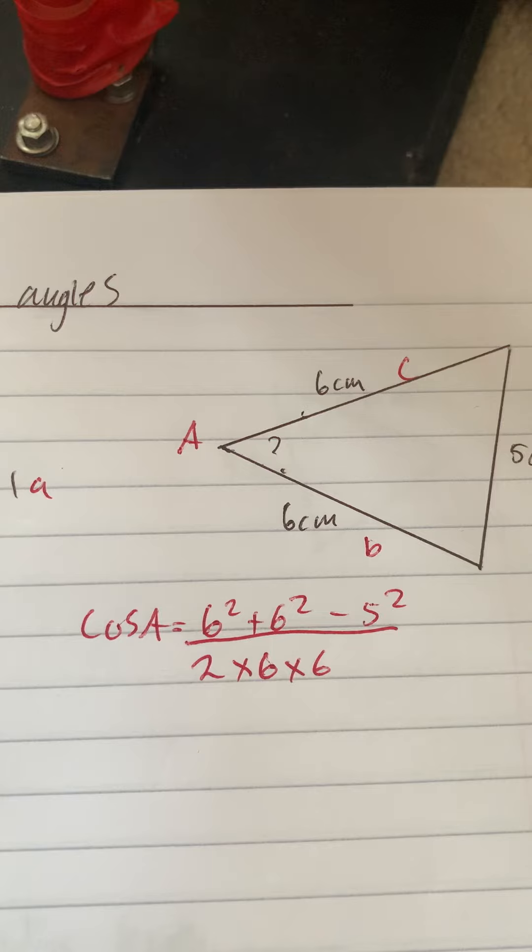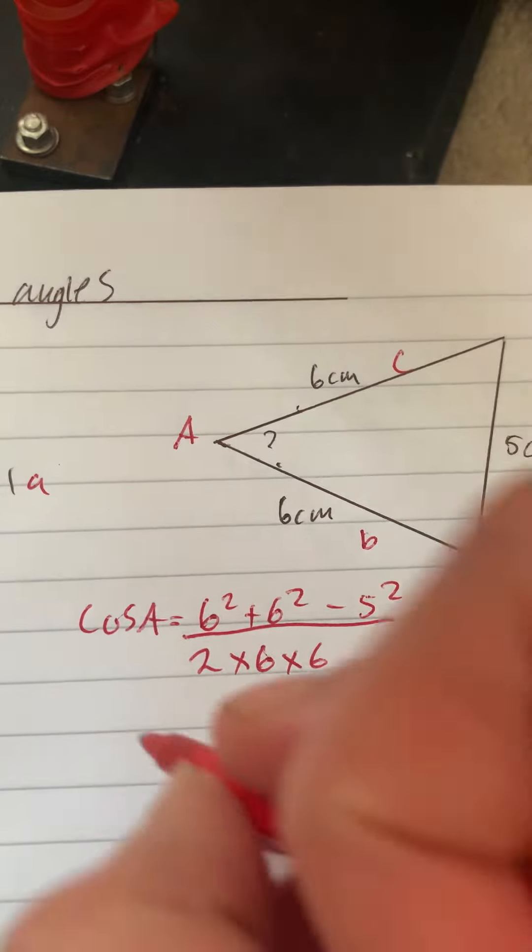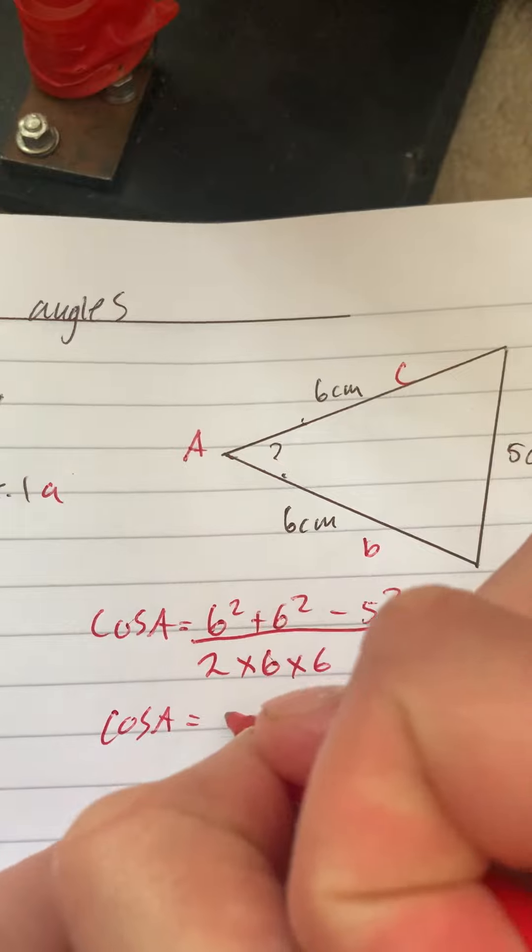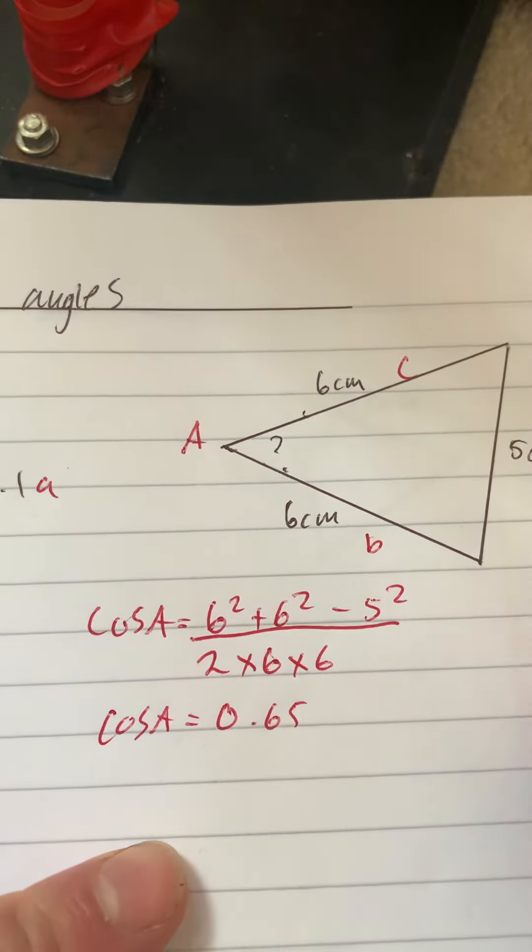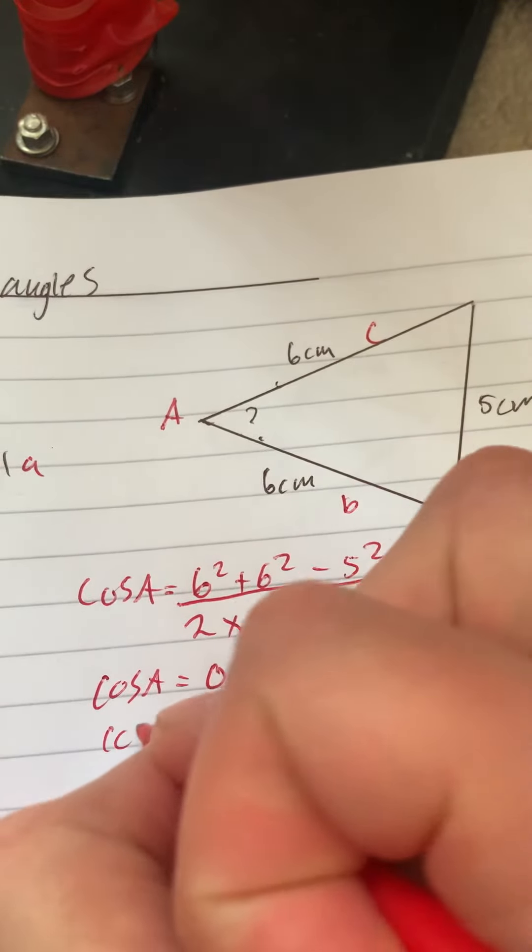So we've got cos A is equal to 0.65. We need to do cos minus 1 of that.